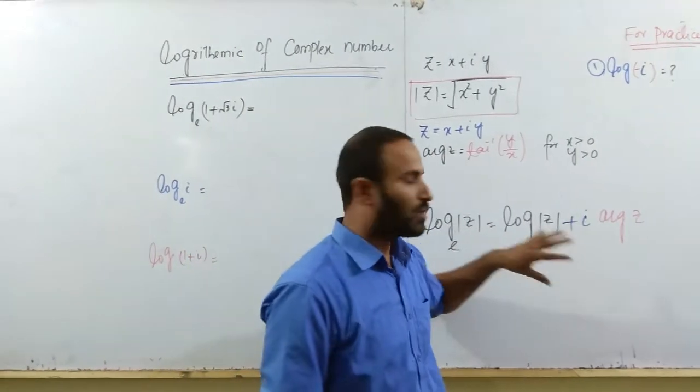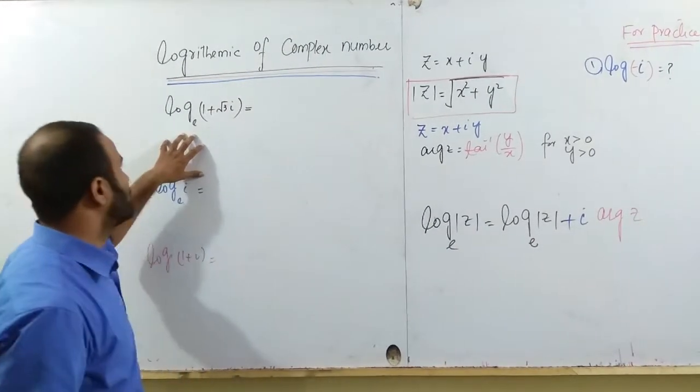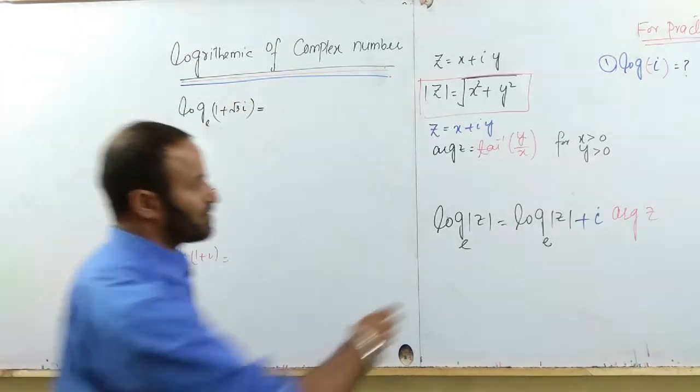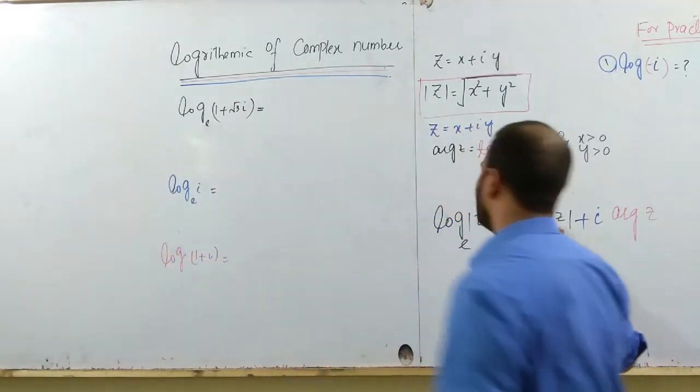Using this definition and trick, we are going to find out the logarithm of the complex number 1 plus square root 3 iota. First of all, I want to find out the magnitude.